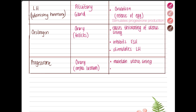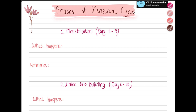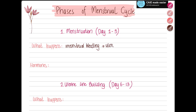Now we'll discuss the phases of the menstrual cycle. Day one is considered the first day of the cycle. During this time menstrual bleeding occurs because the uterus lining is shed. Hormone levels are low, and only FSH starts to rise. Remember, FSH stimulates the development of follicles in the ovary, and these follicles produce estrogen.